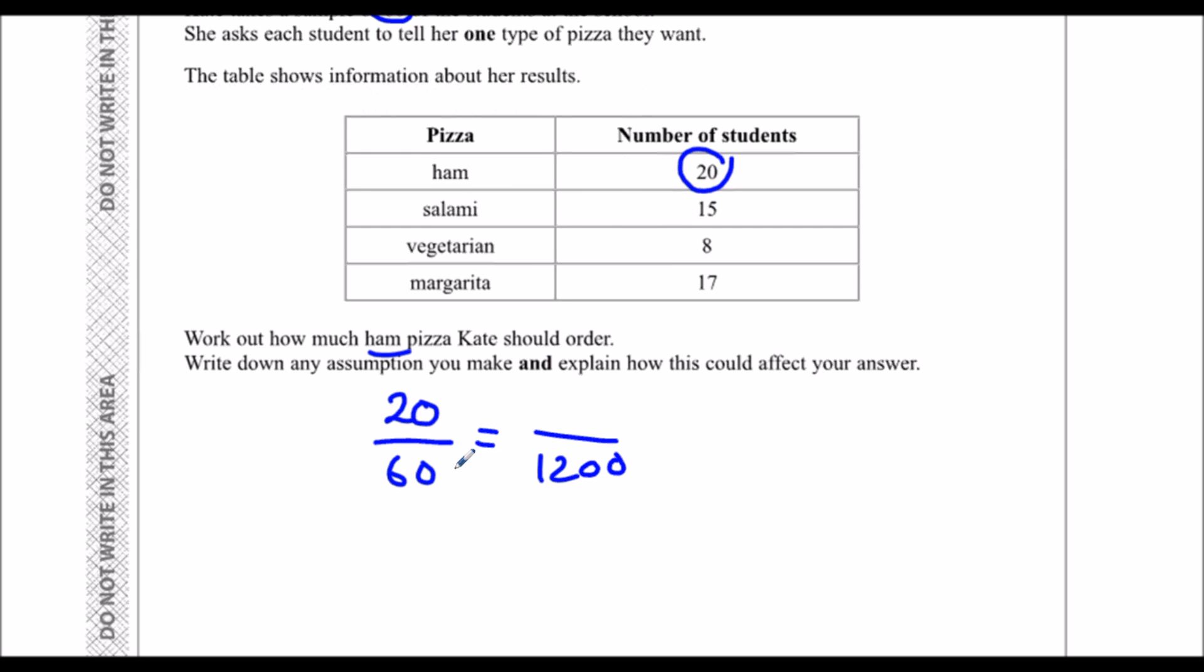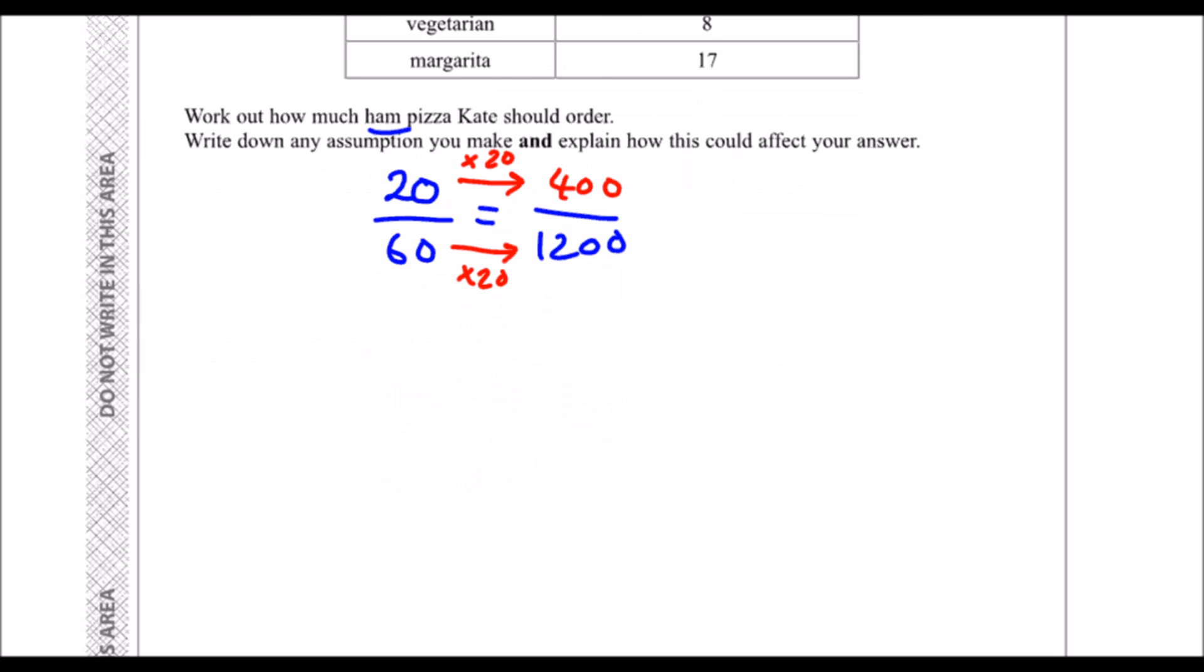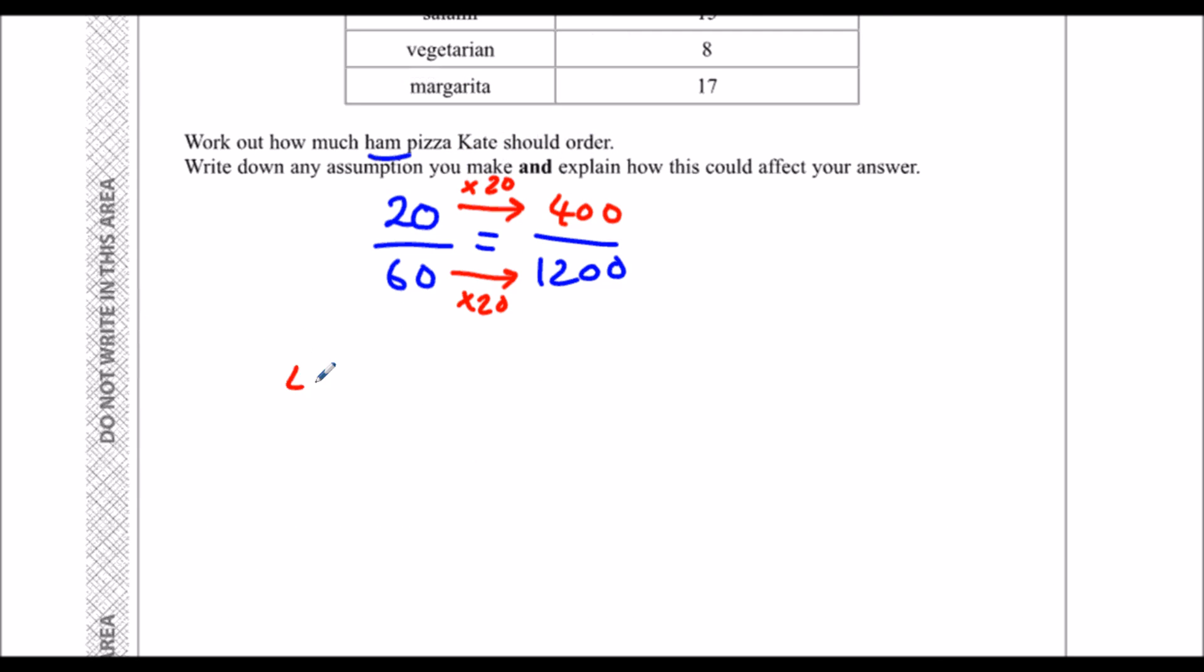What we could do is work out what we've got to multiply 60 by to get 1,200, which is times 20, and then times the top by the same thing. So 2 times 20 is 40, add on the zeros. So 20 out of 60 is the same as 400 out of 1,200. So she could order 400 pizzas, 400 ham pizzas.